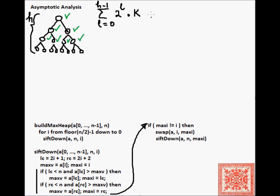After the swap, there is a recursive call. In the worst case, that recursive call has to go all the way down to the leaf level. Actually, all the way down to the last but one level. If we're at level l, how many levels down do we have to go?